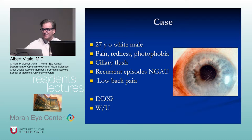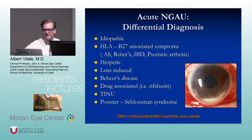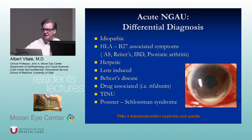Differential diagnosis of non-granulomatous anterior uveitis. Number one: idiopathic. Then the HLA-B27-associated spondyloarthropathies, which includes ankylosing spondylitis, reactive arthritis, inflammatory bowel disease, and psoriatic arthritis.